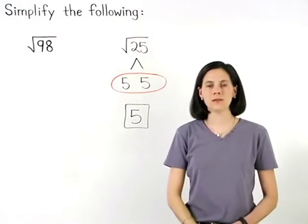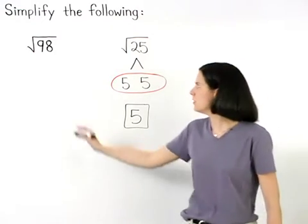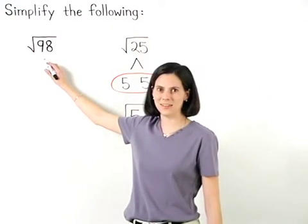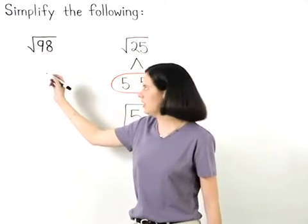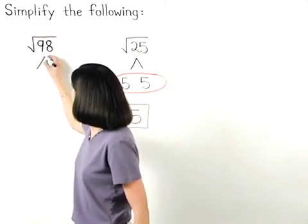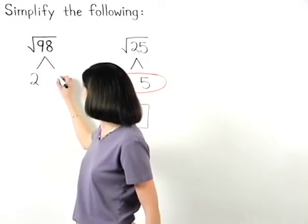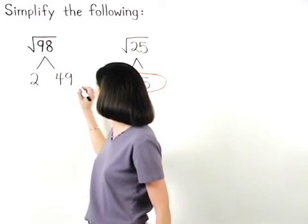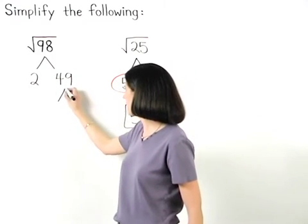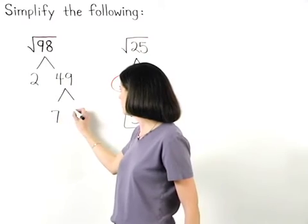The same technique can be used to simplify the square root of 98. Notice that 98 factors as 2 times 49, and 49 factors as 7 times 7.